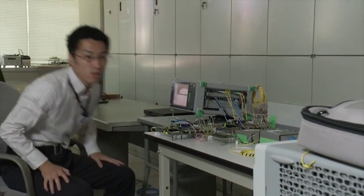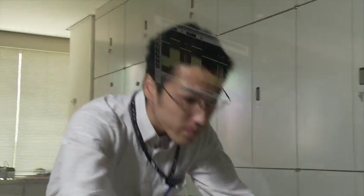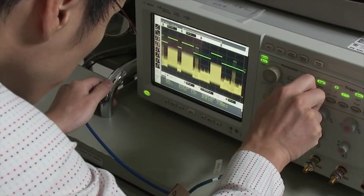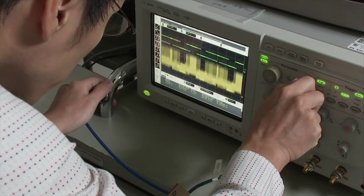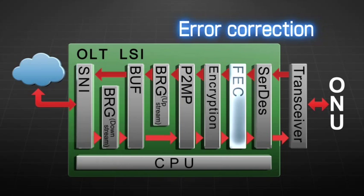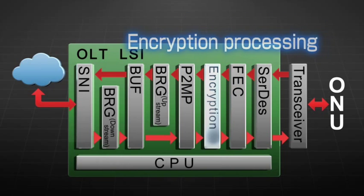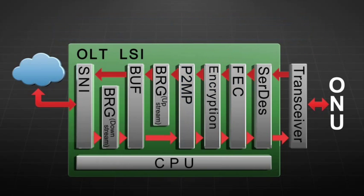The LSI recently developed by NTT provides all the functions needed to control a 10G EEPON network, such as error correction, encryption, distribution of packets according to their destination addresses, and priority control, to say nothing of the signal scheduling function mentioned earlier.